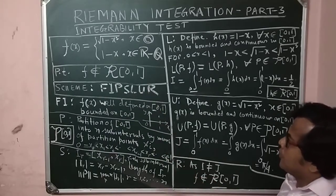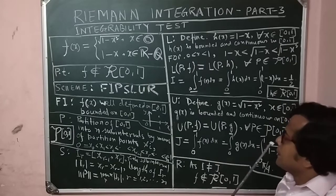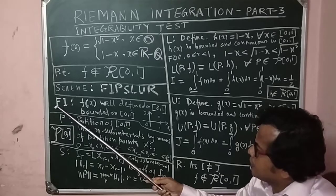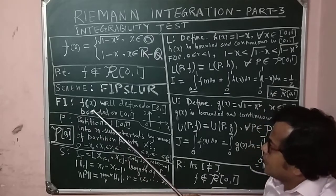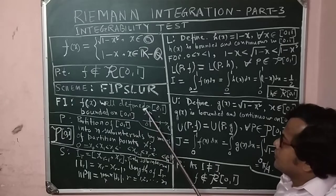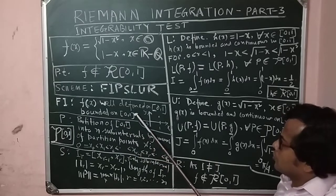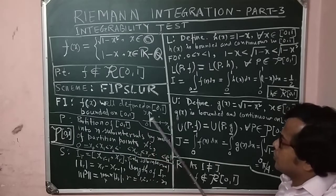We go in sequence. What is FI part? FI means function and integration. Here the function is very well defined on the interval [0,1] and the function is bounded on [0,1].